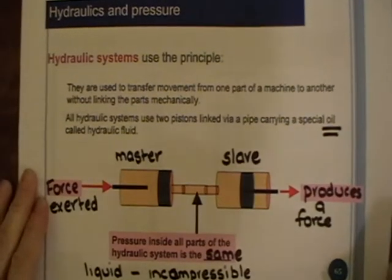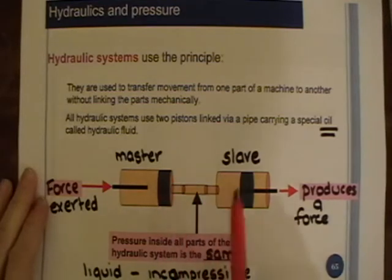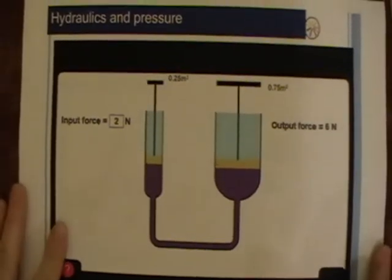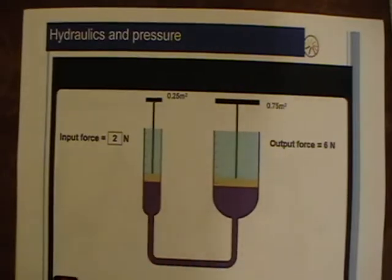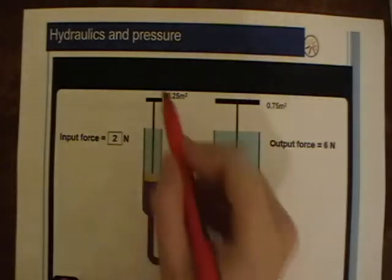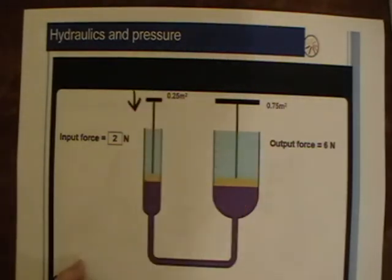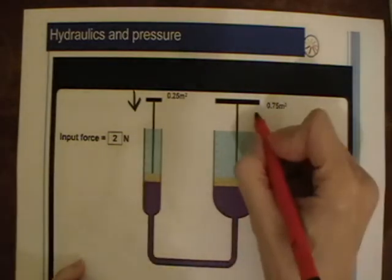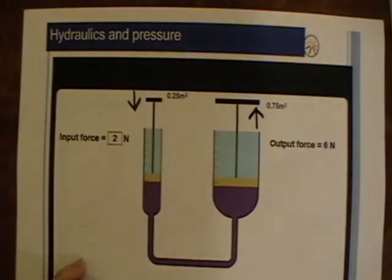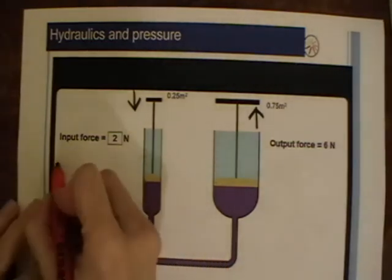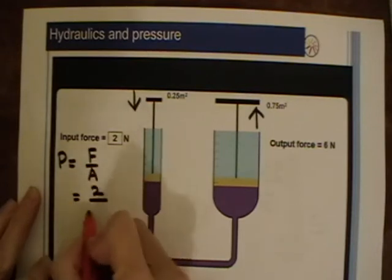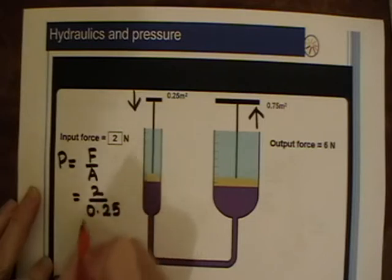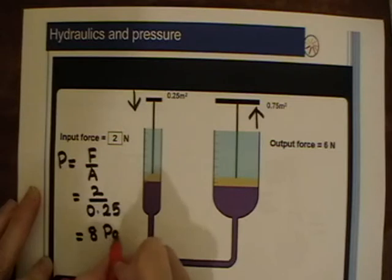A hydraulic system works because a liquid is incompressible and transmits pressure from one piston to the other. Looking at a diagram, this proves that pressure is the same on both sides. If you apply a force of 2 newtons on one side with an area of 0.25 metres squared, the pressure is force over area: 2 divided by 0.25 equals 8 pascals.